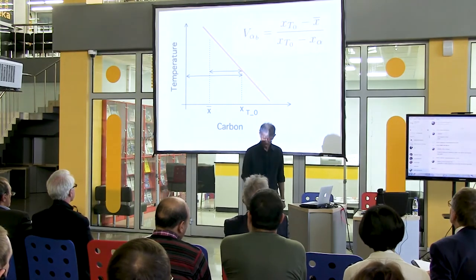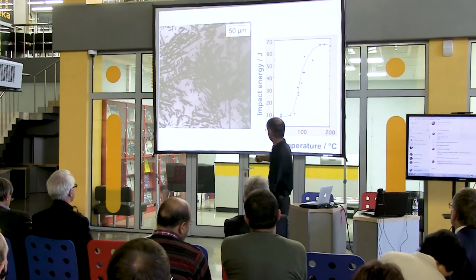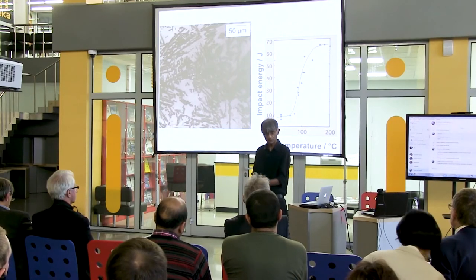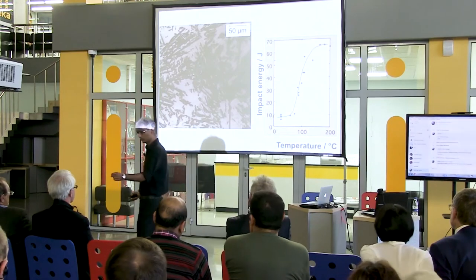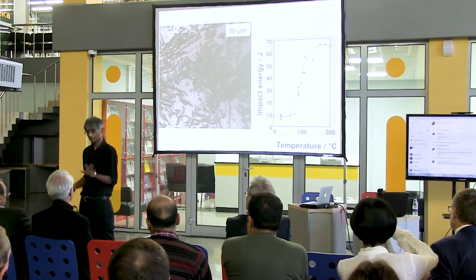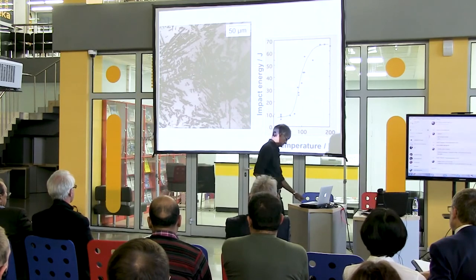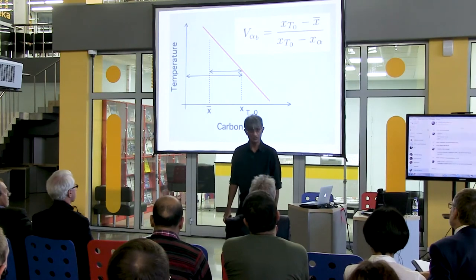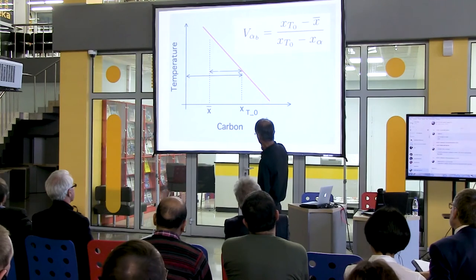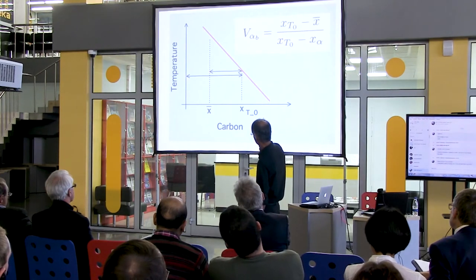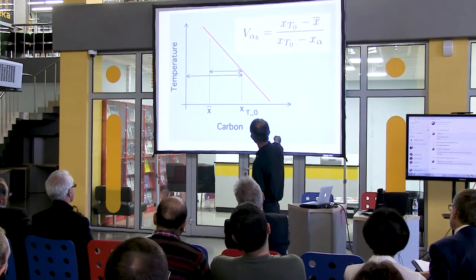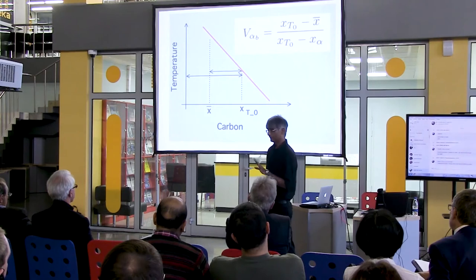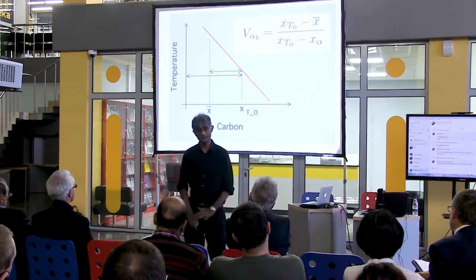What can you do about it? If we can increase the amount of bainite, then these regions will be consumed — they become smaller and smaller. If you have brittle material and you make it small, then it no longer behaves in a brittle way. A simple equation for the volume fraction of bainite: I want to make the volume fraction large. The volume fraction is simply this distance divided by this — where this is the composition of the ferrite and the composition of the austenite where the reaction stops. This is the average carbon in your steel. How can I maximize the volume fraction of bainite?